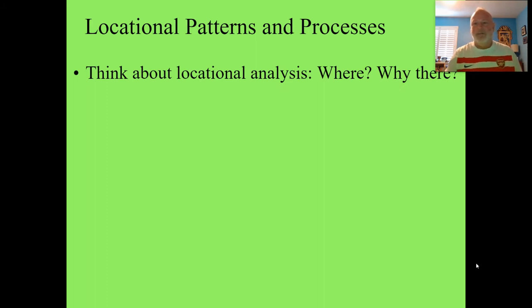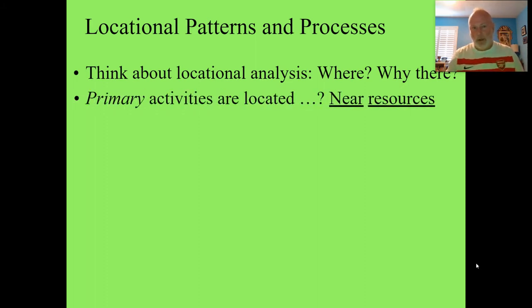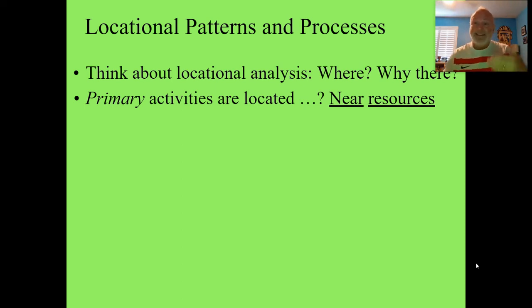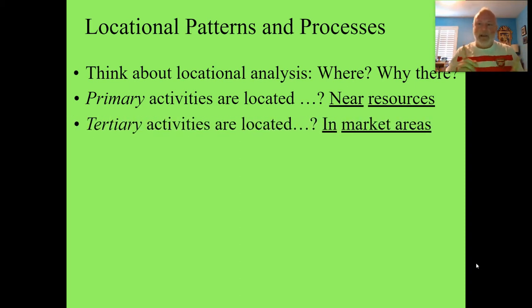Patterns and processes matter — the key questions are 'where?' and 'why there?' Von Thunen's rings show that primary activities must be located near their resources: farming needs soil and water, mining needs coal nearby, fishing needs fish. Secondary activities must locate somewhere between the resource and the market — closer to the resource, closer to the market, or anywhere in between. Tertiary activities must be near people, unless quaternary or quinary, which can be distantiated.